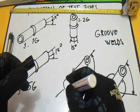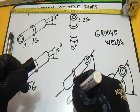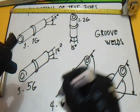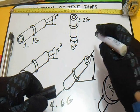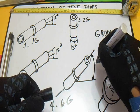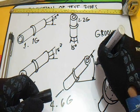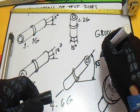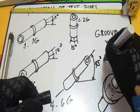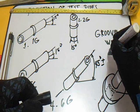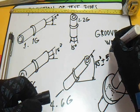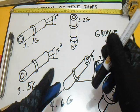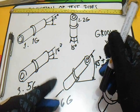Number 4 is 6G. The 6G position is at 45 degrees, positive or negative 5 degrees, and this position is not rotated.